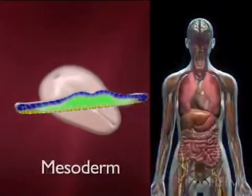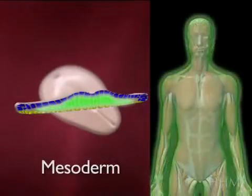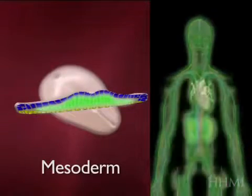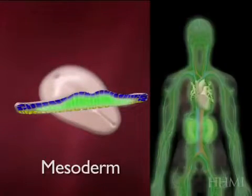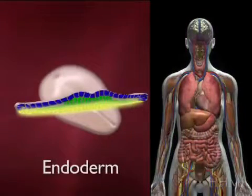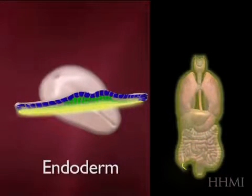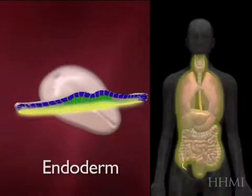The middle part, the mesoderm — shown in green here — gives rise to the muscle, including the kidneys and the heart. And the endoderm gives rise to the whole gut tube. There you see the lung, the liver, the intestine.